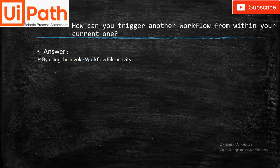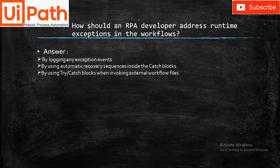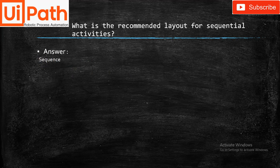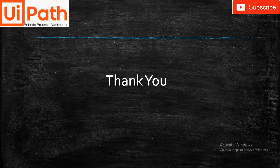The recommended layout for a sequence of UI interactions is Sequence. To trigger another workflow from within your current one, use the Invoke Workflow File activity. An RPA developer should address runtime exceptions by logging exception events, using automatic recovery sequences inside Catch blocks, and using Try-Catch blocks when invoking external workflows. To manage passwords, use Windows Credential Manager and the Get Password activity. The recommended layout for a sequential activity is Sequence.